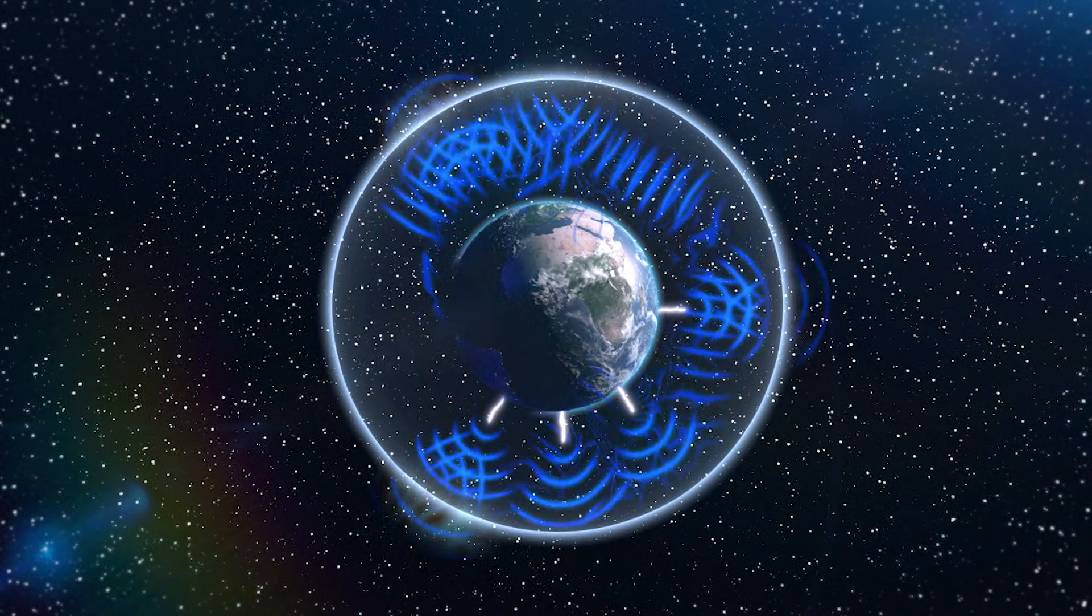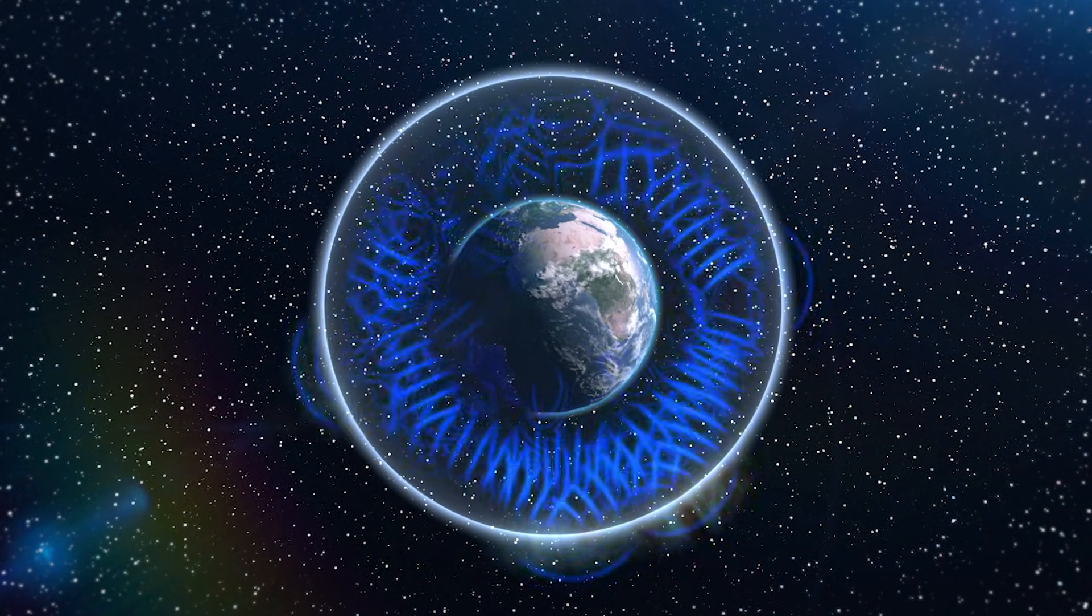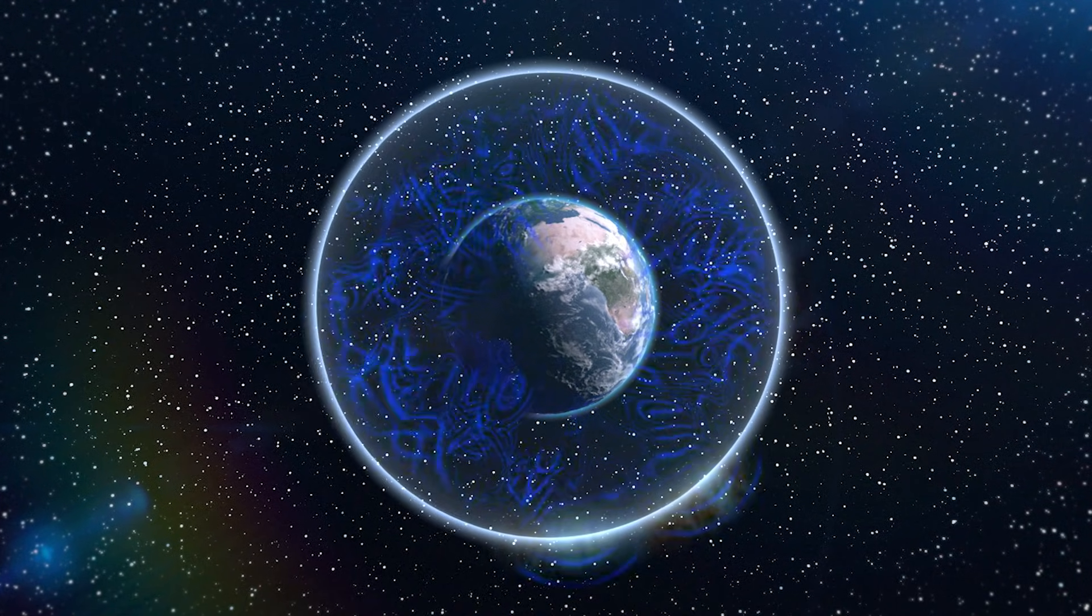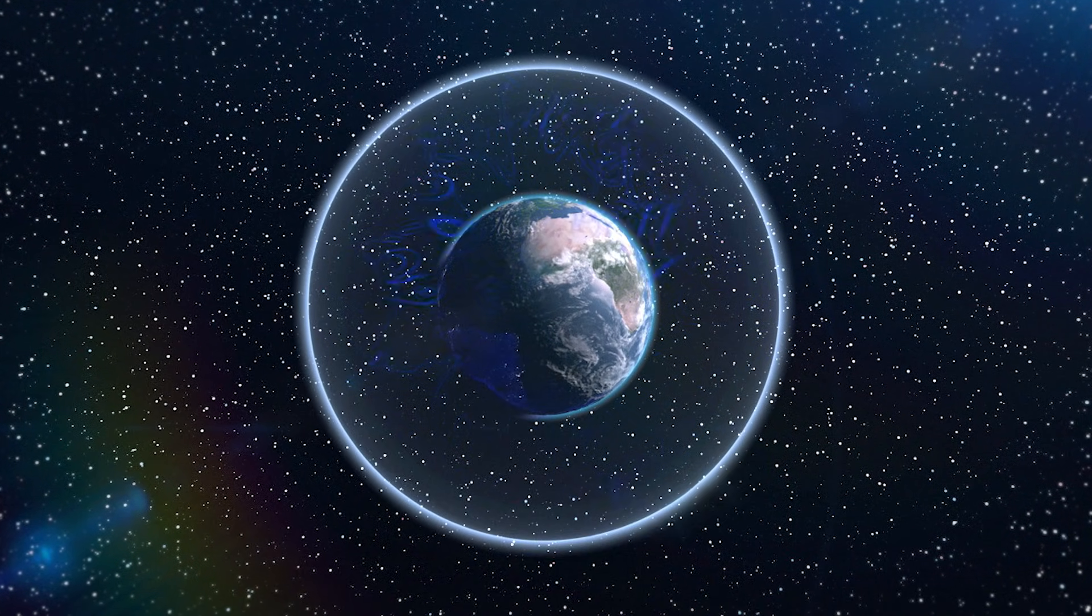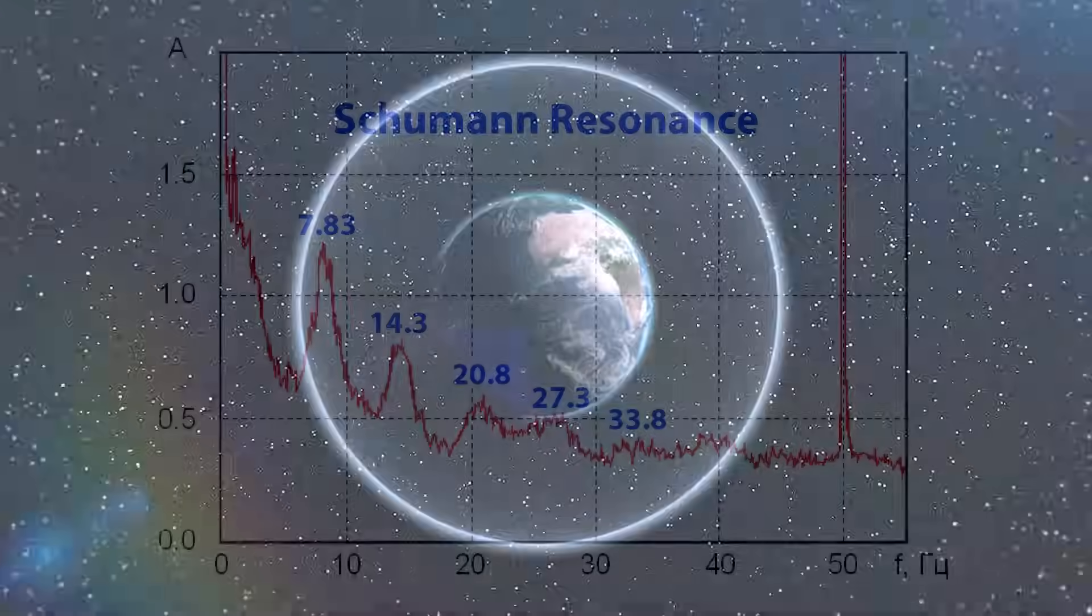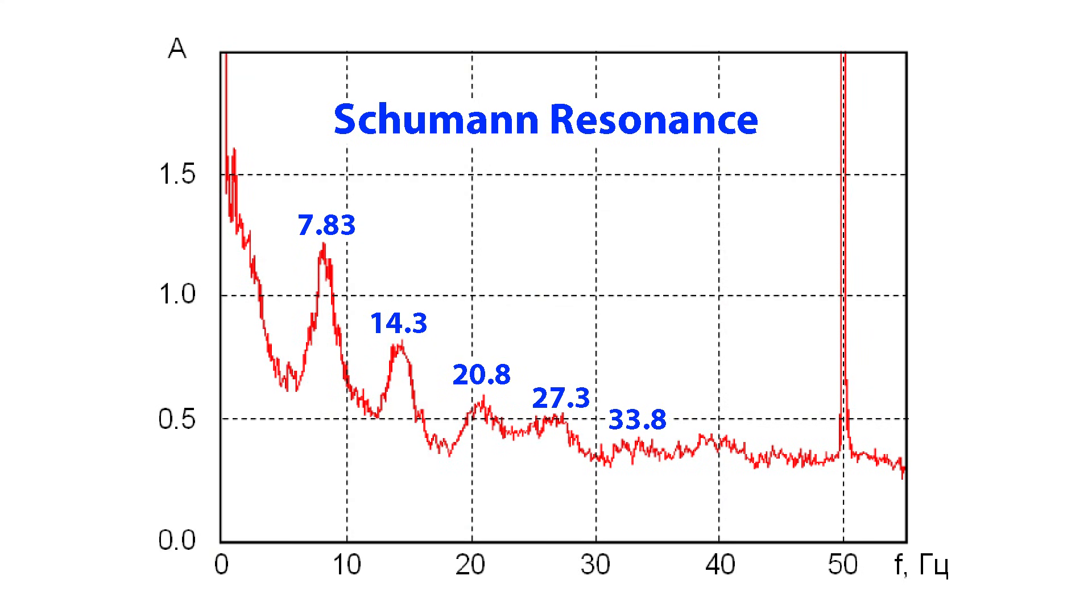This is a Schumann resonance. With each photon traveling at 300,000 kilometers per second, its wavelength equals the circumference of the Earth. The foundational Schumann resonance is 7.83 hertz, with higher modes at 14.3, 20.8, 27.3, and 33.8 hertz.